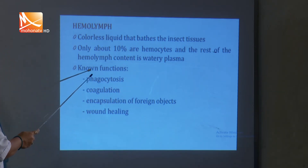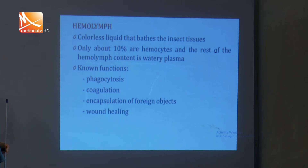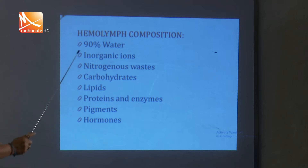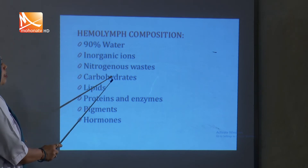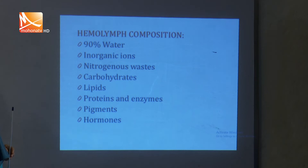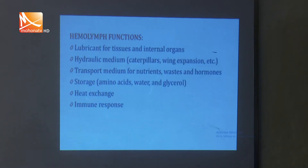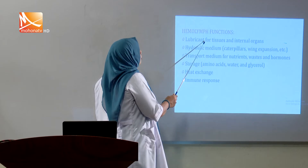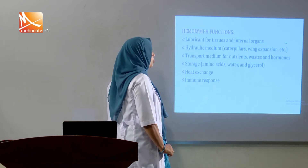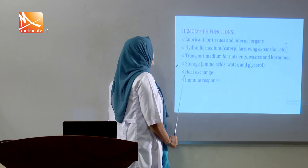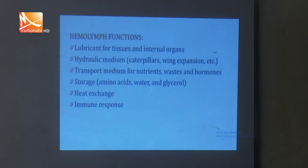The known functions of hemocytes are phagocytosis, coagulation, encapsulation of foreign objects, and wound healing. The composition of hemolymph is 90 percent water, inorganic ions, nitrogenous waste, carbohydrates, lipids, protein, enzymes, pigments, and hormones. The functions of hemolymph include: lubricant for tissues and internal organs, hydraulic medium, transport medium for nutrients, wastes and hormones, storage for amino acids, water and glycerol, heat exchange, immune response, and contributing to wing movement and molting of the exoskeleton.